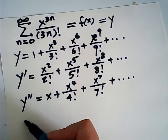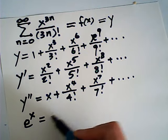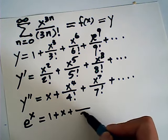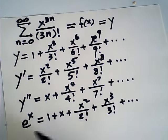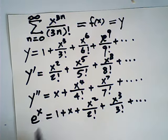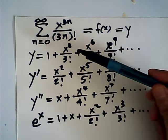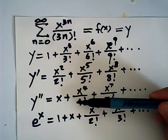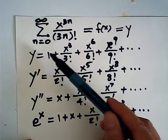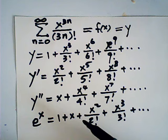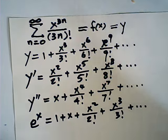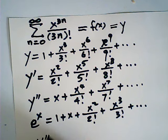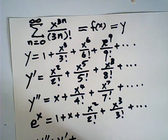We know that e to the power of x equals 1 plus x plus x squared over 2 factorial plus x cubed over 3 factorial, and so on — that is the well-known series for e^x. Do you notice that combining y, y', and y'' — the constant term, the x term, the x squared term, the x cubed term, the x fourth, fifth, sixth, seventh, eighth, ninth, and so on — gives us exactly e^x? This means y'' plus y' plus y equals e^x.